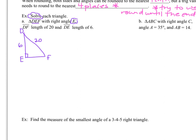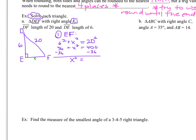We know two of our three sides, so we can calculate our missing side length EF by using Pythagorean theorem. I'm going to mark this side X and use a² + b² = c². That means 6² + x² = 20², the hypotenuse squared. 6² is 36 and 20² is 400. Moving 36 over, we get x² = 364. Taking the square root of each side, the square root of 364 is not a perfect square, so we round to the nearest tenth: 19.1. That's one of our three answers.